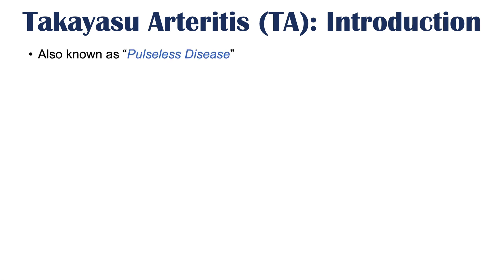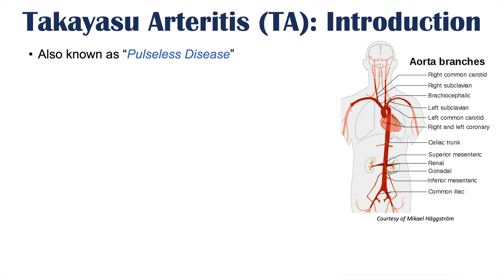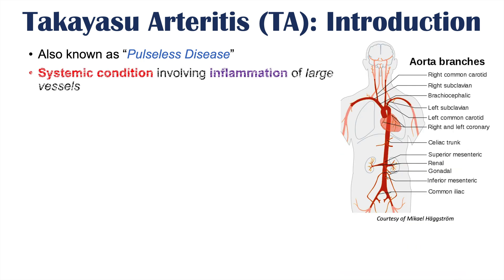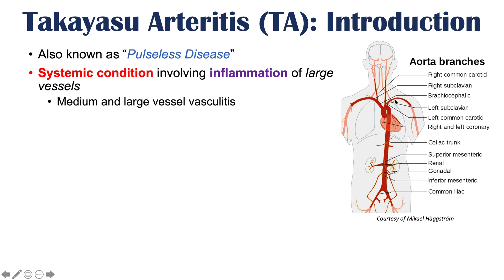Takayasu's Arteritis is also known as pulseless disease, and it is a systemic condition involving inflammation of large vessels. It can affect some medium-sized vessels as well, so it can often be referred to as a medium and large vessel vasculitis. It often affects the large vessels of the aortic arch and the branches off of the aortic arch, which causes many of the signs, symptoms, and complications we'll discuss later.